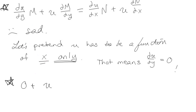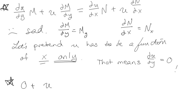That gives us 0 + u · My, using the notation where My means the partial derivative of M with respect to y, and Nx means the partial derivative of N with respect to x. So we have u · My = ∂u/∂x · N + u · Nx.